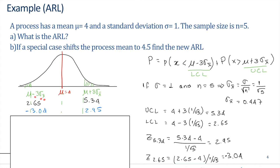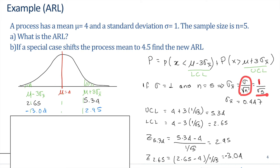If we plot this, we have our mean equal to 4, and the limits mu minus 3 sigma-x-bar and mu plus 3 sigma-x-bar — remember this sigma is of the sample. The probability of being outside is defined as the probability of x-bar less than mu minus 3 sigma-x-bar, plus the probability of x-bar greater than mu plus 3 sigma-x-bar. Since sigma equals 1 and n equals 5, the standard deviation of the sample is sigma divided by the square root of n, which equals 1 divided by the square root of 5, so sigma-x-bar equals 0.447.